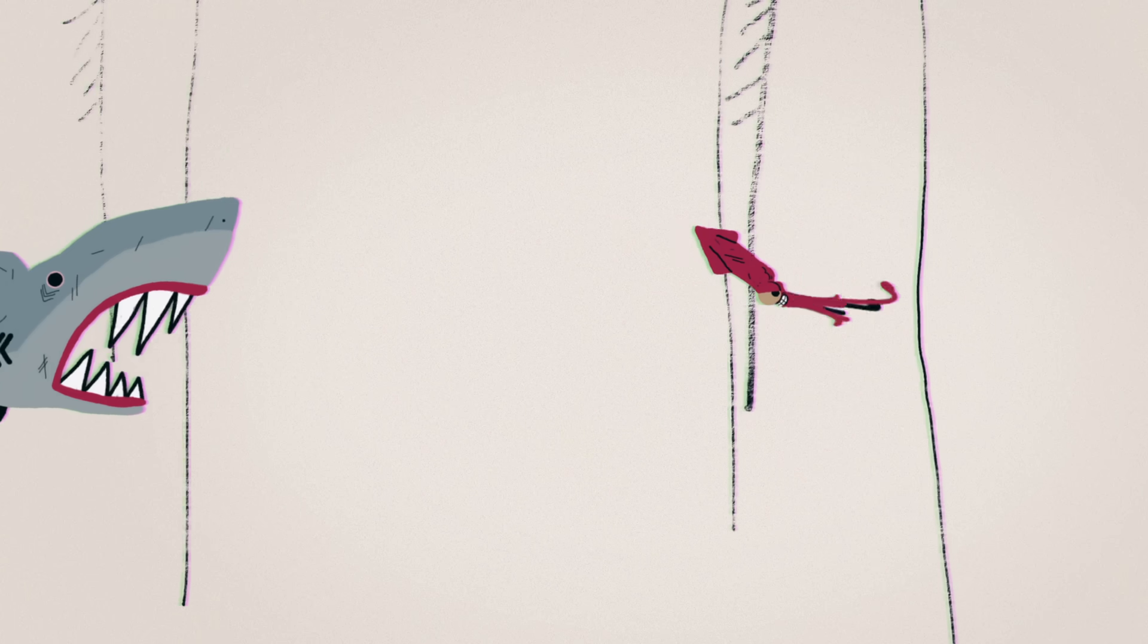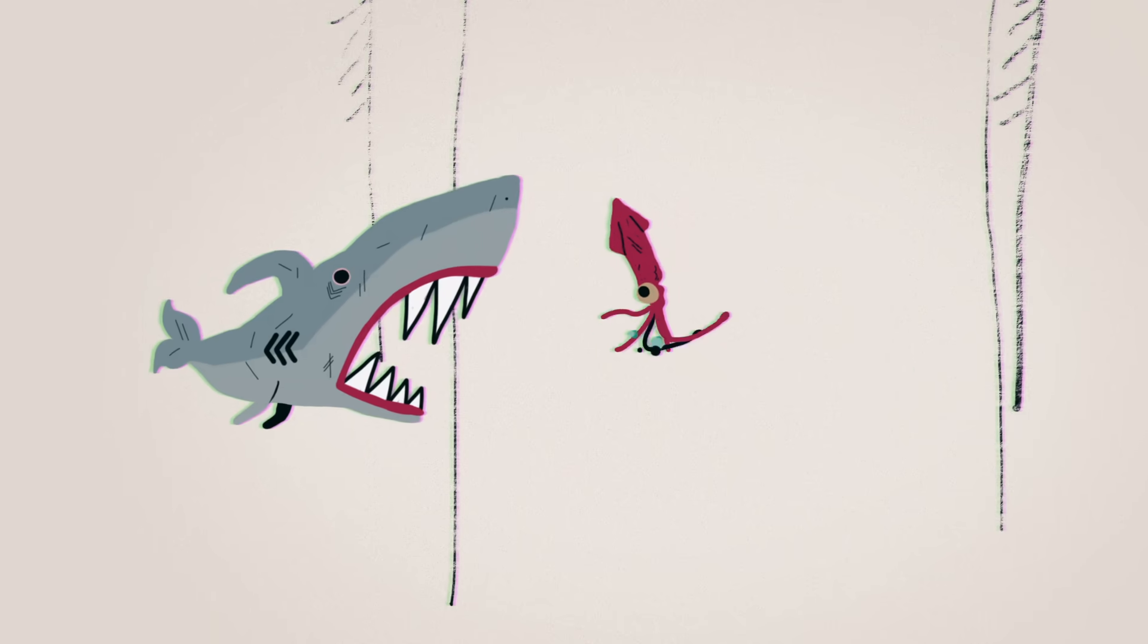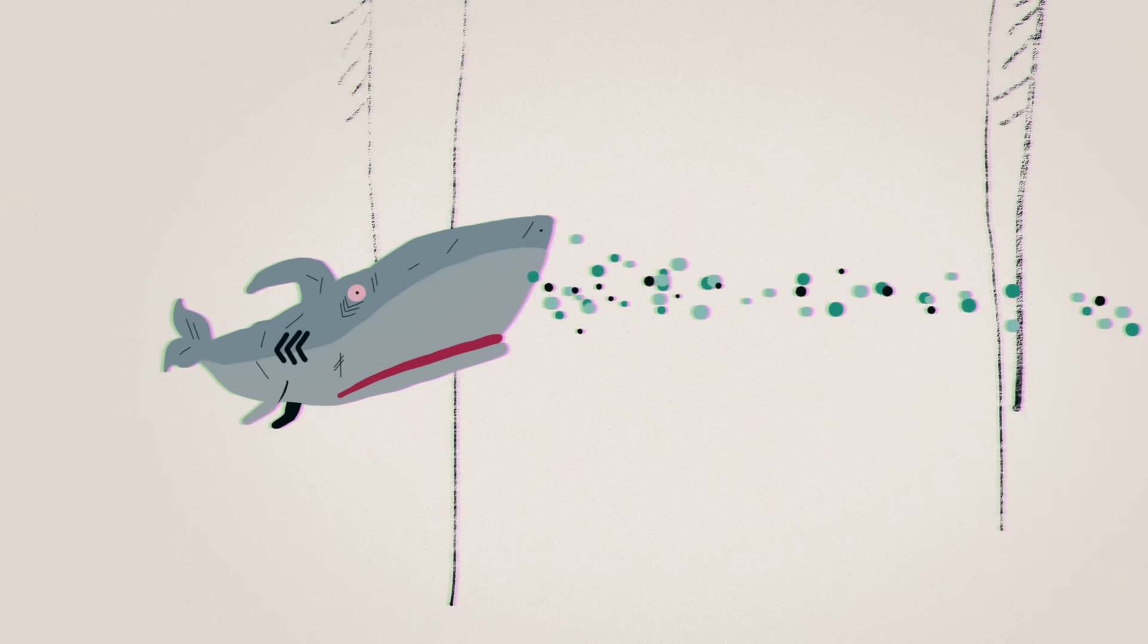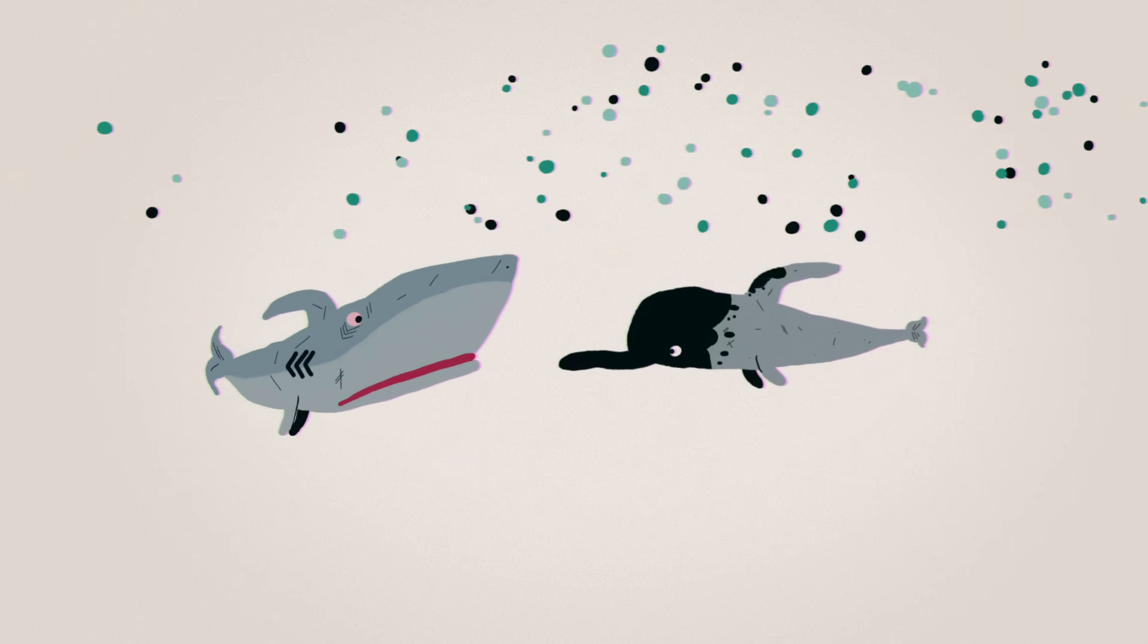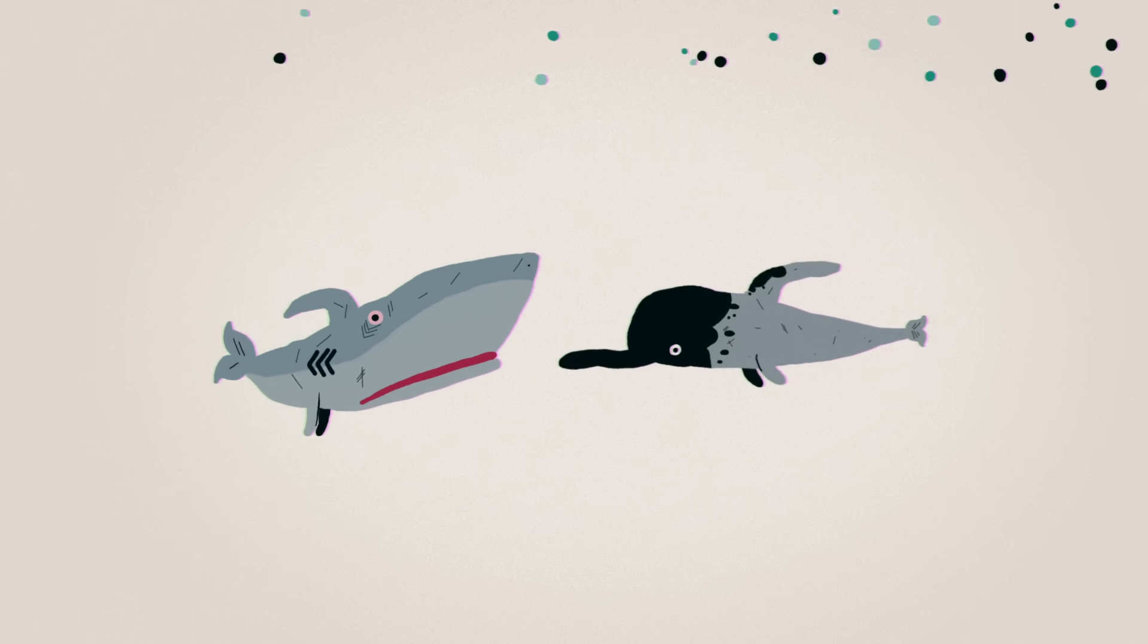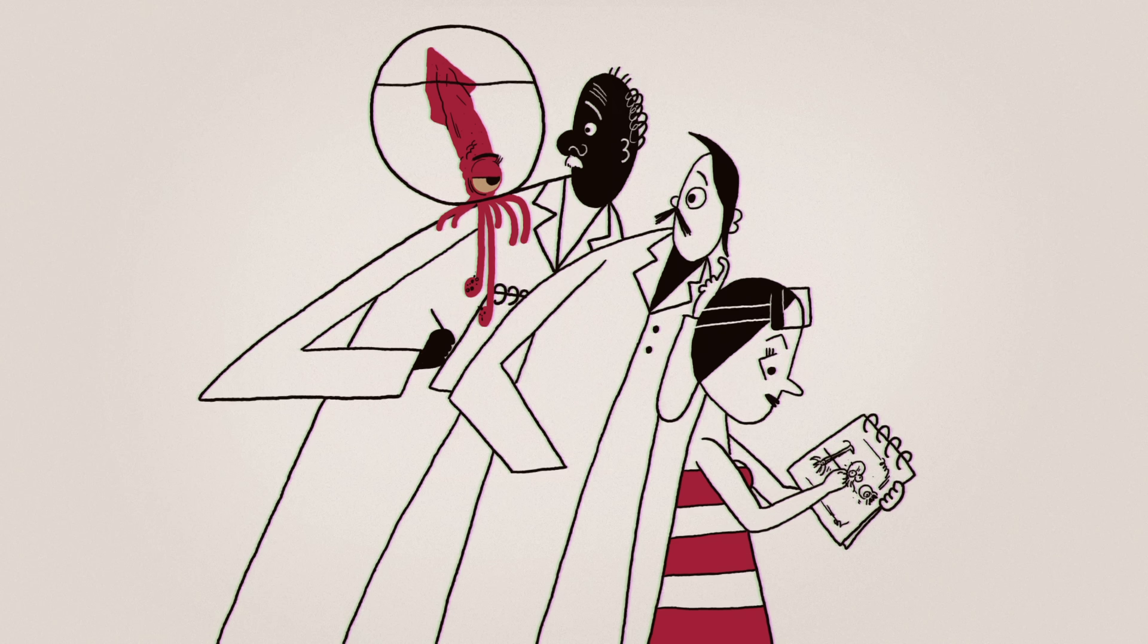As a final touch, squid rely on jet propulsion to rapidly shoot away from their hunters, reaching speeds of up to 25 miles per hour and moving meters away in mere seconds. This makes them Earth's fastest invertebrates.